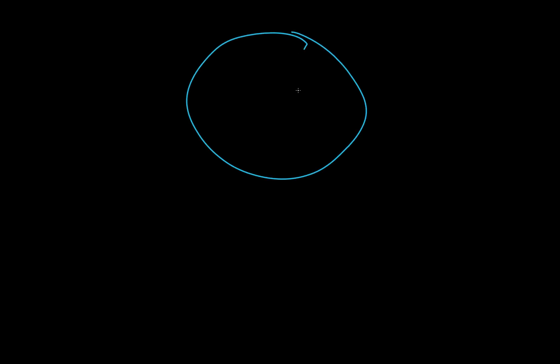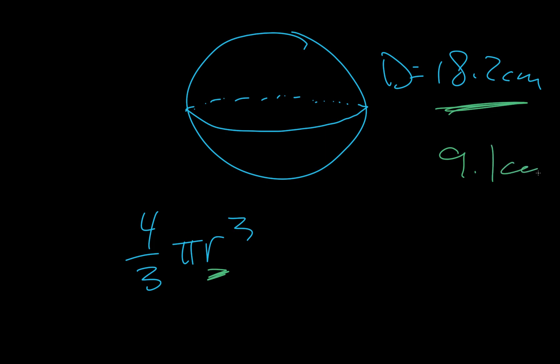And then we have a sphere, and this time we're given the diameter is equal to 18.2 centimeters. And so the volume of a sphere is this formula. And so all we need is the radius. So we cut this in half, say 9.1 for the radius.